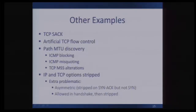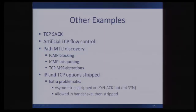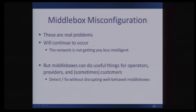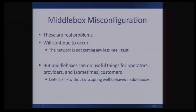ECN and window scaling are just two in a sea of IP and TCP functionality that can get disrupted by middleboxes. There are other issues too, such as TCP selective acknowledgements, artificial flow control using the receive window, and a whole bunch of stuff in the IP and TCP options space. The high-level takeaway is that these are real problems and they're going to continue to occur — the network's not getting any less intelligent. Even when these issues occur on just a small percentage of connections, they can still have a wide-reaching impact: just a small percentage affected is enough to dissuade a large content provider from turning on some new feature, so it can really hurt protocol innovation.